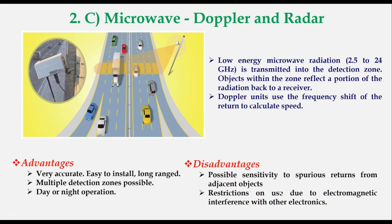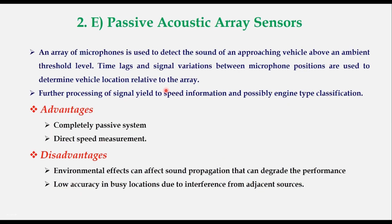Another device in the non-intrusive category is passive acoustic array sensors. An array of microphones is used to detect the sound of an approaching vehicle above an ambient threshold level. Time lags and signal variations between microphone positions are used to determine vehicle location relative to the array. Further processing of this data can yield speed information and possibly the engine type classification of the vehicle.